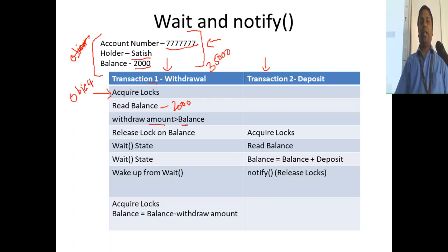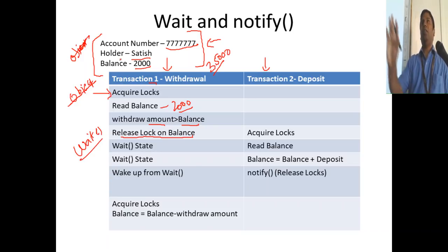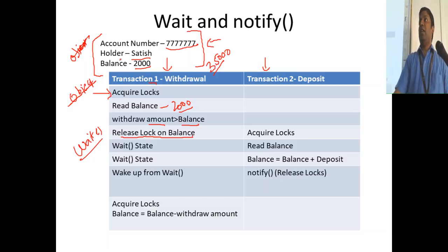The withdrawal amount, 35,000, is greater than the balance of 2,000. So what it's going to do is release the lock on that object and go into wait mode. When it calls the method wait(), it releases the lock on the object and goes into a passive state — it will not be executing any other lines.